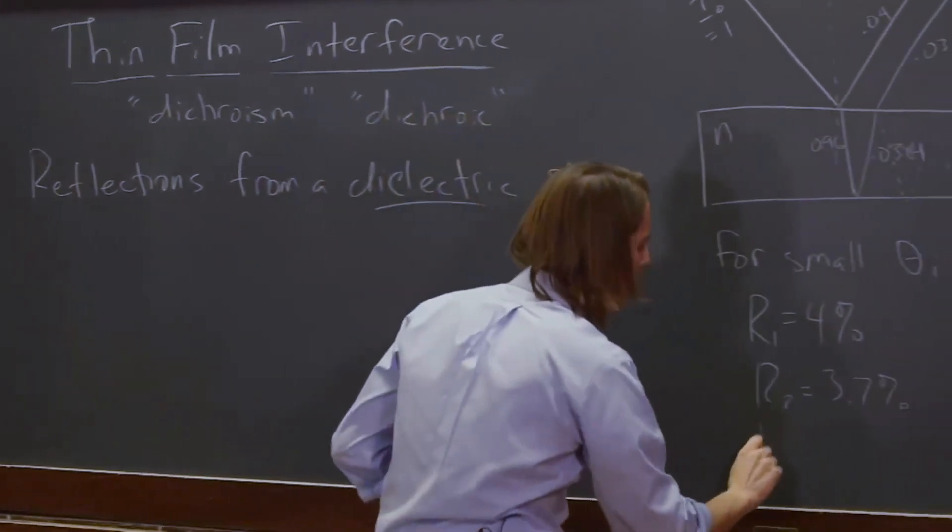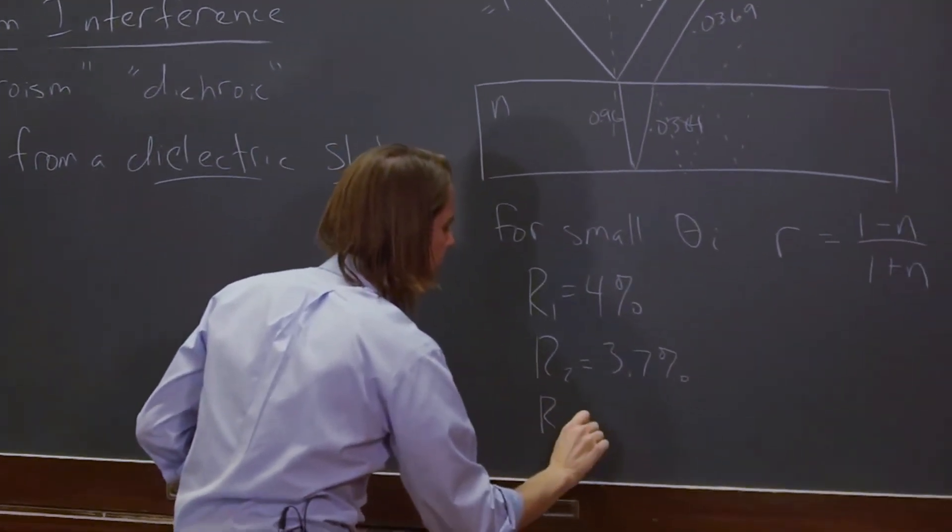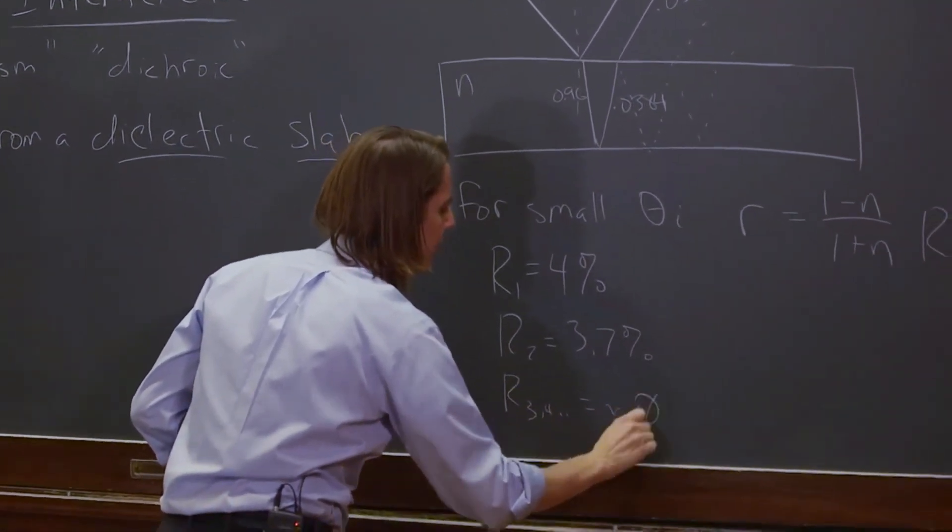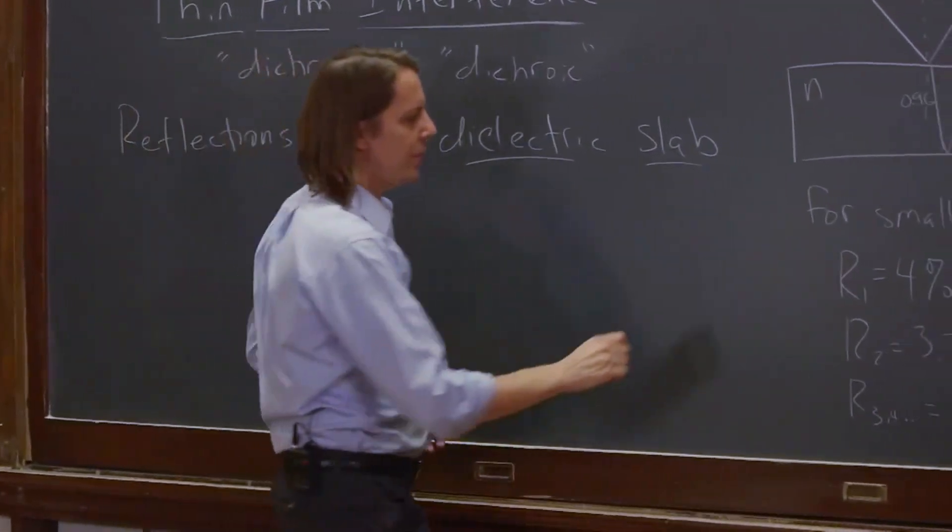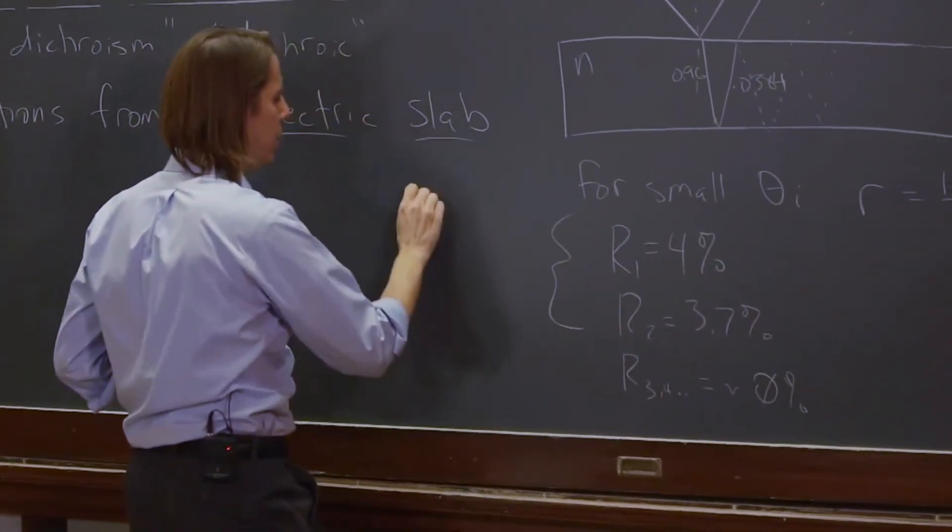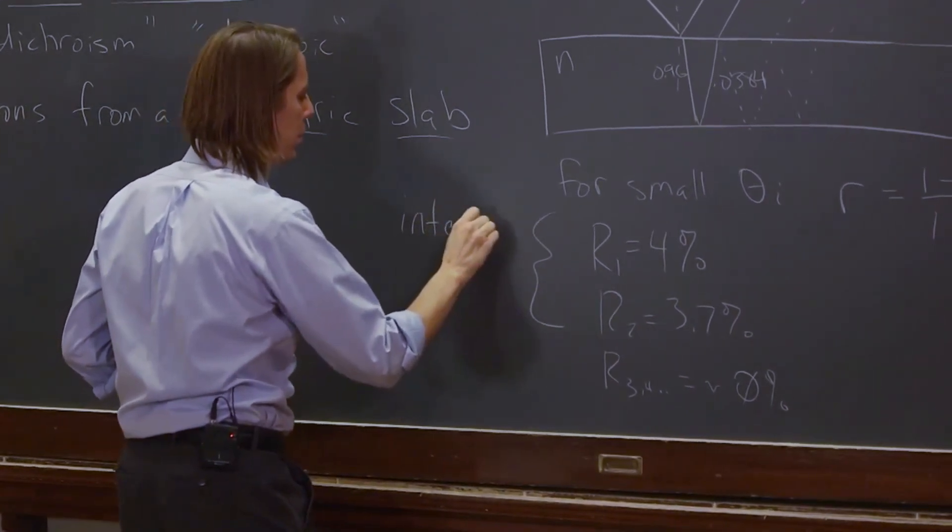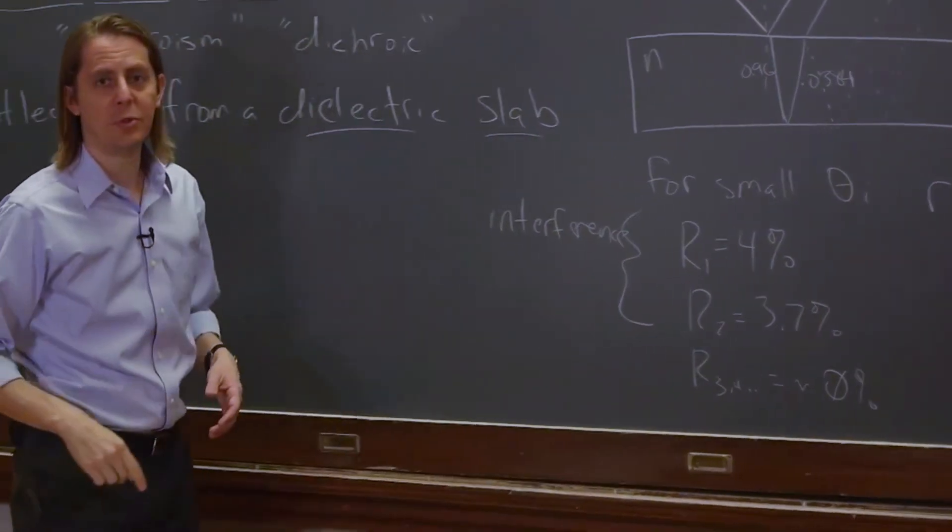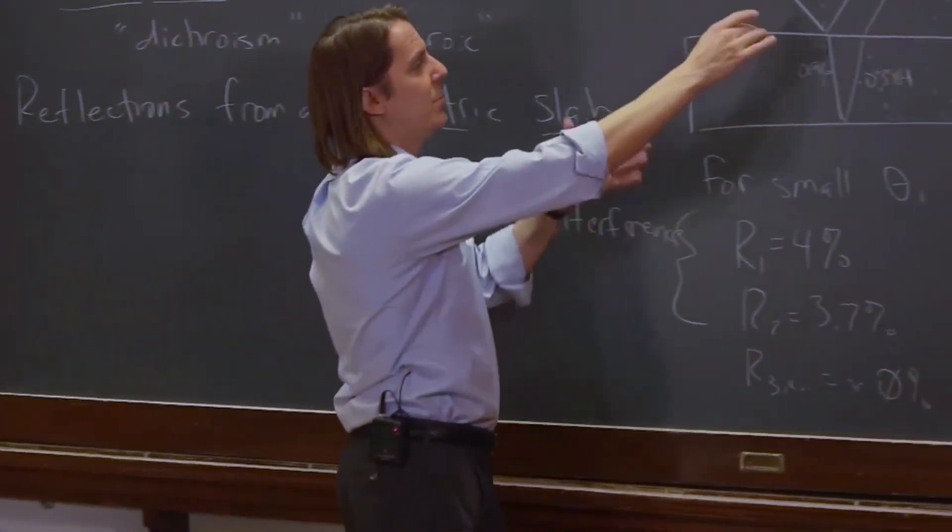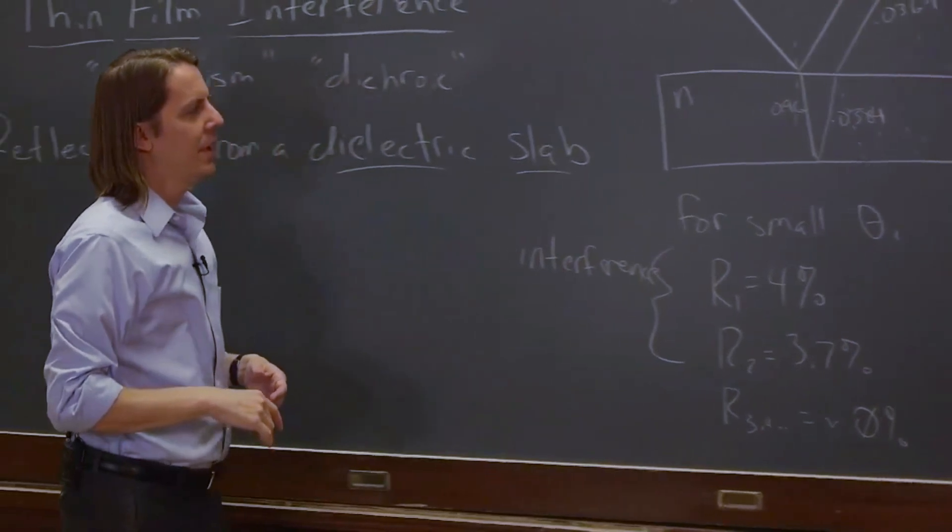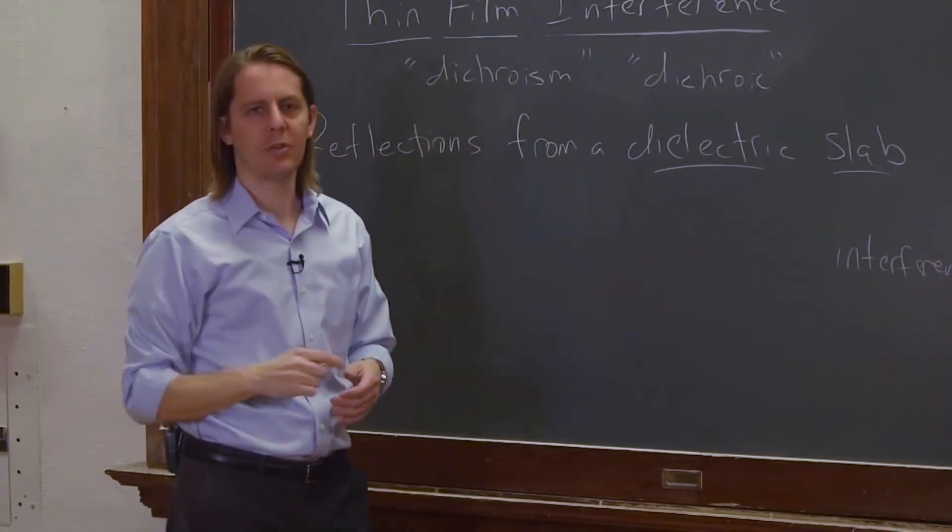So what we want to do is consider the interference of these two beams. And what we're going to find is it depends on angle. It depends on wavelength. Lots of interesting aspects to this is what creates all the pretty colors.